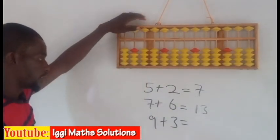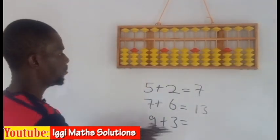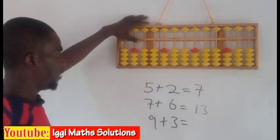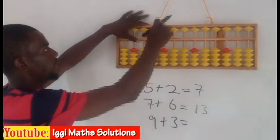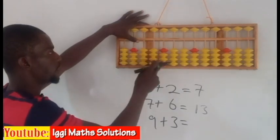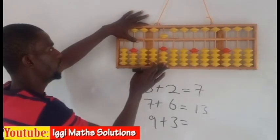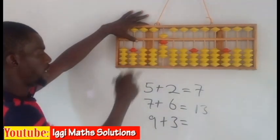Let us solve this next, the last one, which is 9 plus 3. So I have to represent 9 first on the abacus. This is my unit rod, for example, 5, 4. This is 9 on the abacus,